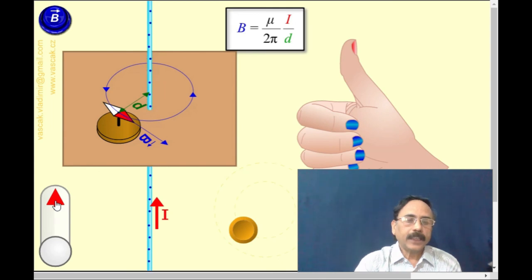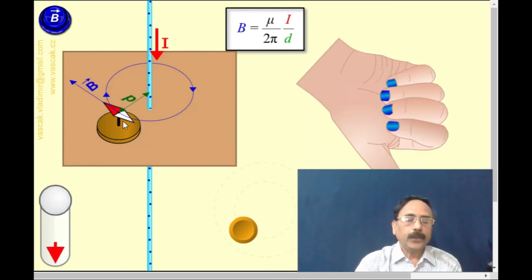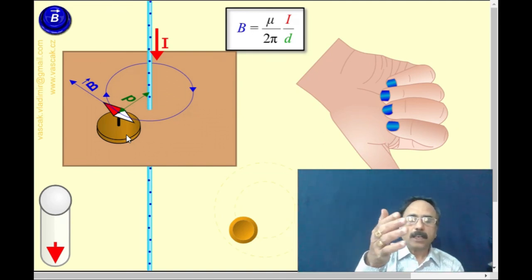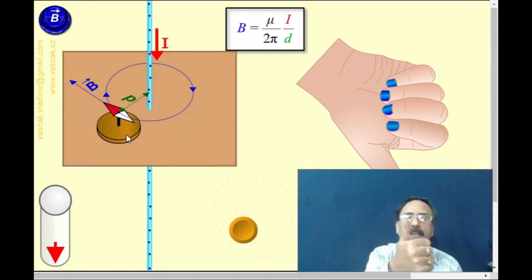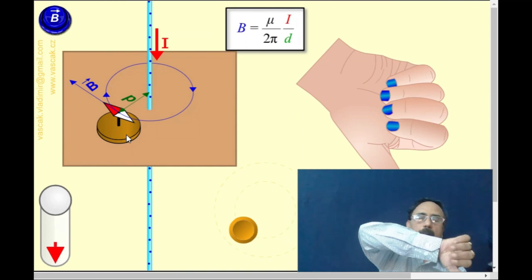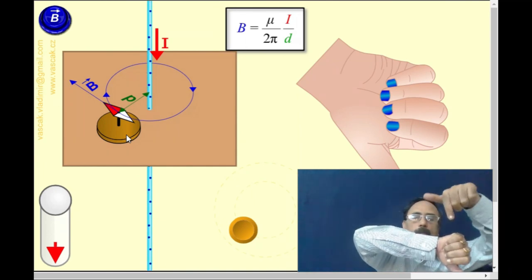Now, if I change the direction of the current, you would have observed that the magnetic needle is deflected and then the direction of the magnetic field is also reversed. So, previously, it was in the anti-clockwise direction if you look from the top. Now, it is in the clockwise direction if you look from the top.